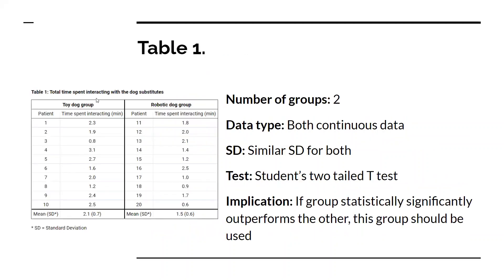For Table 1, we work out how many groups we have. We've got two groups and they both contain continuous data. We already stated they had similar standard deviations. A suitable test to compare two different treatment groups would be a student's two-tailed t-test. The implication is it will tell us whether one group outperforms the other, informing whether the toy dog or robotic dog is more suited for this task.